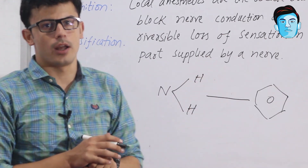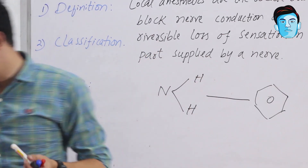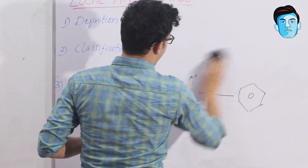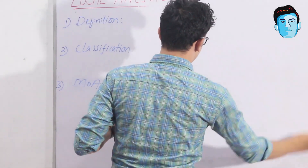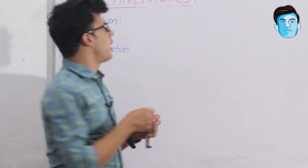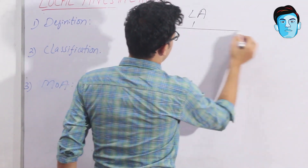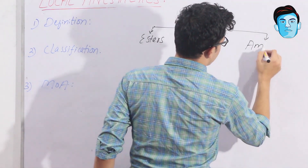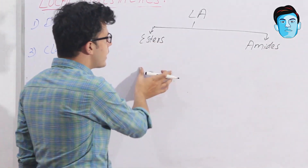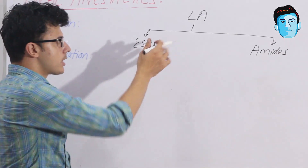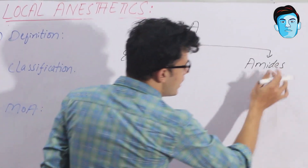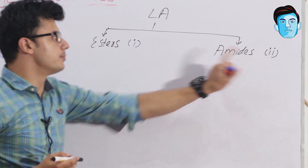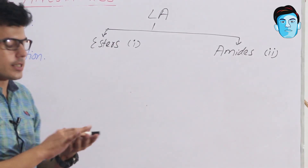Now let's talk about the classification of local anesthetics. Local anesthetics are classified into two groups: esters and amides. A useful trick to remember: all drugs that come under the ester class will have one 'i' in their name, while all drugs under the amide class will have two 'i's in their name.